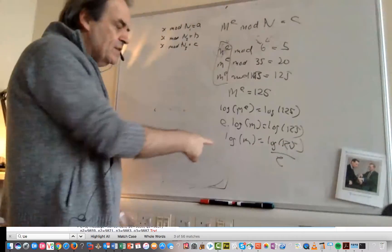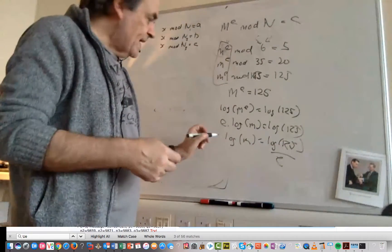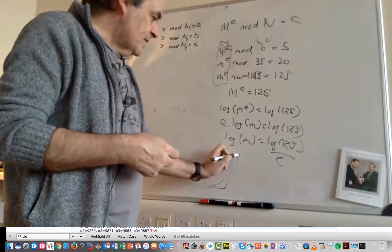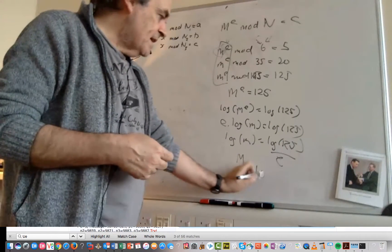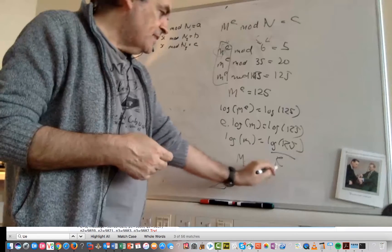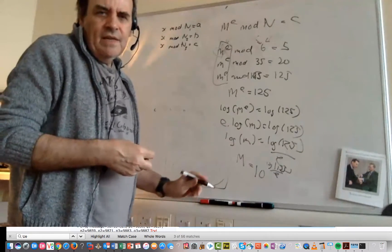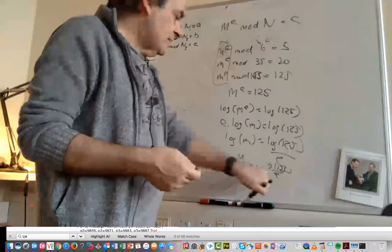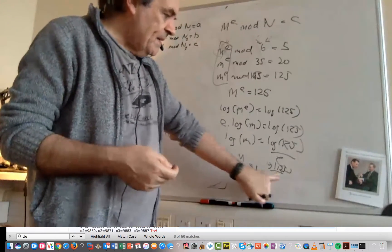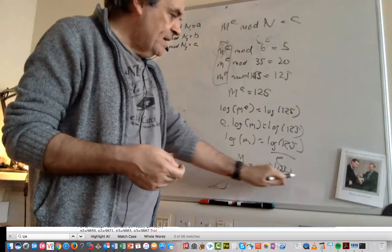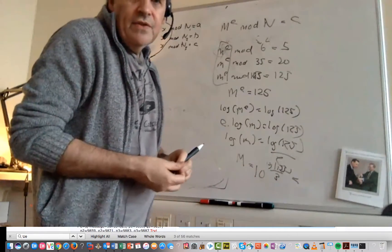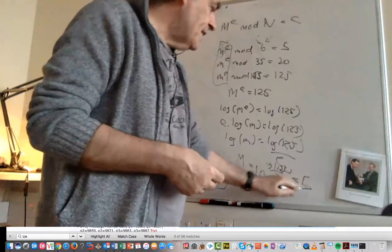And the inverse of a log is to the power of 10 for using log to base 10. So we have 10 to the power of log of 125 divided by E. So in this case, E we know because it's the public key. And we'll just say that's 3. So we can find out that the original message was 5.